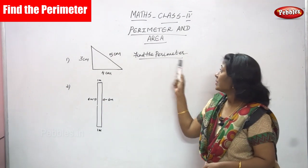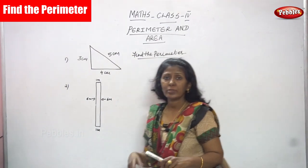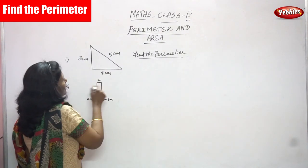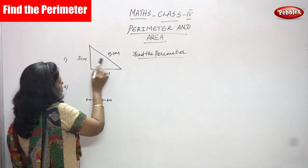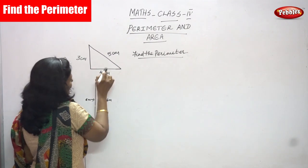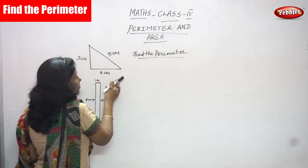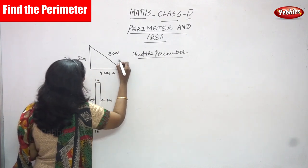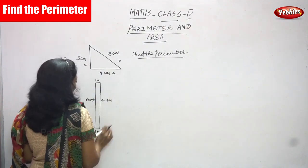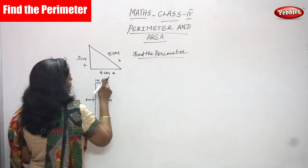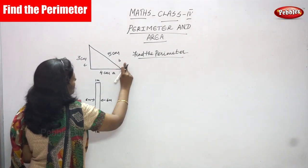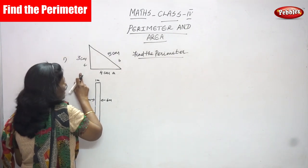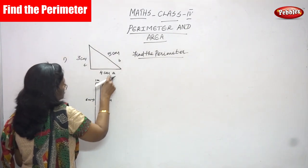Now we are going to find the perimeter of the figures. The first question is a right triangle. Three sides are given — you can consider them as a, b, and c. Side a is equal to four centimeters, side b is equal to five centimeters, and side c is equal to three centimeters.